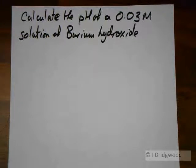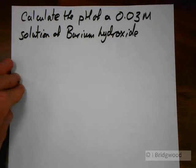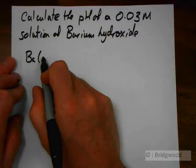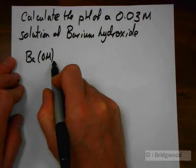So, a strong base calculation. Calculate the pH of a 0.03 molar solution of barium hydroxide. Now barium hydroxide has the formula Ba(OH)2.